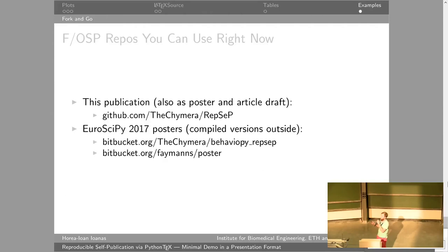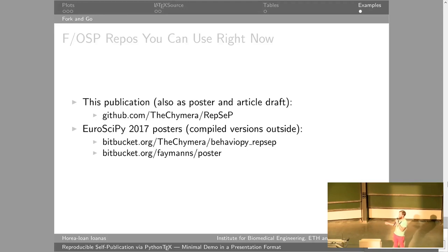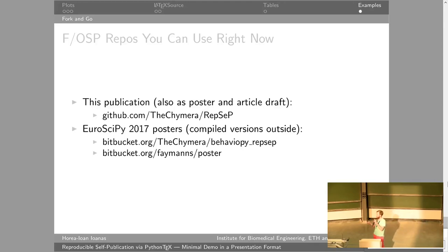If you want to look at a couple of examples — because this is all about giving you the power to just fork and go — you can find this presentation on GitHub, as well as a poster and an article using the same technology. My poster, which is outside, and the poster of my master's student, which is also outside, have been written with this technology. You can see them compiled and on paper, and you can download the source code.